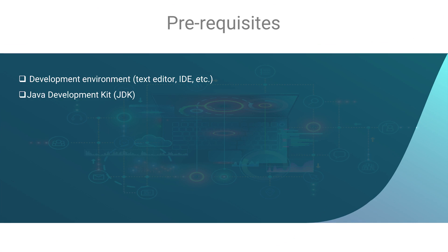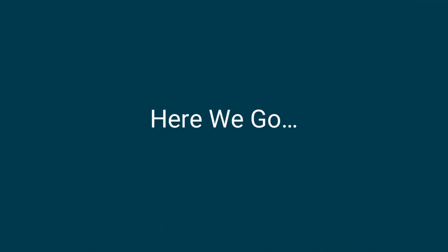The prerequisites for this course are pretty simple. Wherever possible we're going to try to minimize the required knowledge of programming, and so the prerequisites mainly focus on what you'll need on your machine: something to write code in, whether that's a simple text editor like Notepad or Vim, or an integrated development environment or IDE. You also need the ability to develop and run Java code, so you need the Java Development Kit, or JDK, downloaded and installed, as it provides the compiler, debugger, and runtime environment. That's all you need to get started. So here we go.